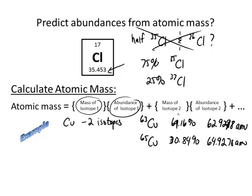Then we look at the next isotope, we do the mass of it, multiply it by its abundance, and we keep doing that for all the different isotopes that we have. In this case there's only two, so we're only going to have two terms.